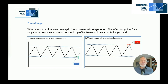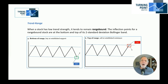If a stock does not have trend strength, then we consider that a range bound stock. The inflection points here are pretty simple: the top of the two standard deviation Bollinger Band or the bottom of the two standard deviation Bollinger Band. All these alerts will be available to you with TPA.